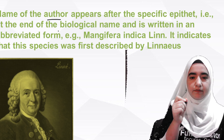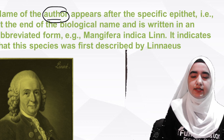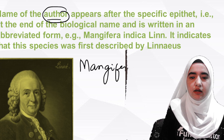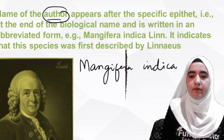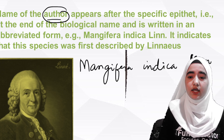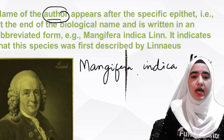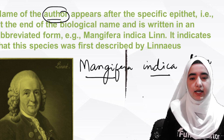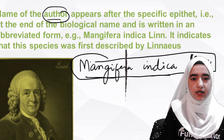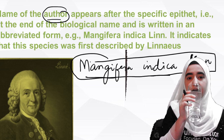When a biologist or scientist has described and named an organism, the abbreviated name of the author is written after the scientific name. For example, Mangifera indica Linn. — here Linn. is the abbreviation for Carolus Linnaeus, who discovered and described it. The scientific name includes the genus, species, and the author's abbreviated name.